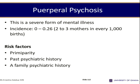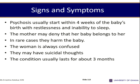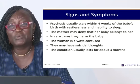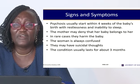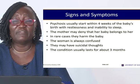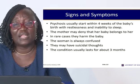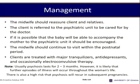Puerperal psychosis is a severe form of mental illness arising as a result of pregnancy. Risk factors include primiparity, past psychiatric history, and family history of psychiatric disorders. It starts within four weeks of birth with restlessness and insomnia. If not intervened, the woman may deny the baby belongs to her; in rare cases she may harm or kill the baby through suffocation. Suicidal thoughts may also occur. The condition lasts about three months. Refer immediately to a psychiatric unit.